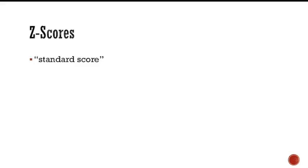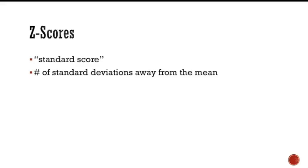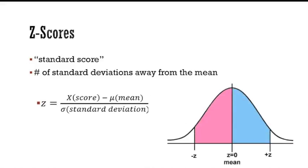Another important aspect of the normal distribution is a z-score. A z-score, or standard score, indicates how many standard deviations a score is from the mean. This can be calculated by the formula: score x minus mean mu, divided by standard deviation sigma. Z-scores can be either positive or negative — a positive z-score means the data lies above the mean, and a negative z-score indicates the data lies below the mean.